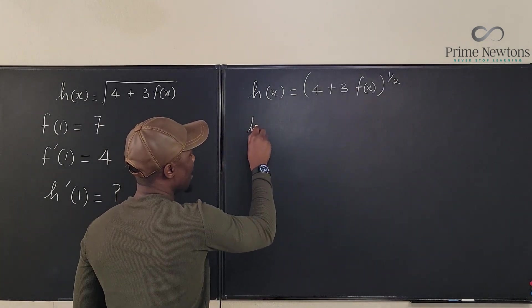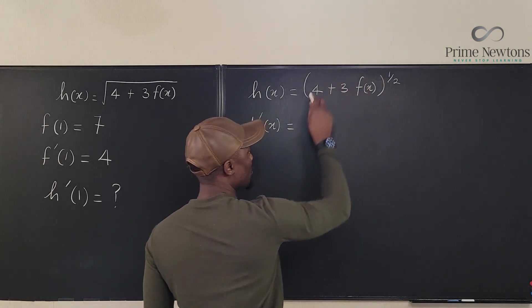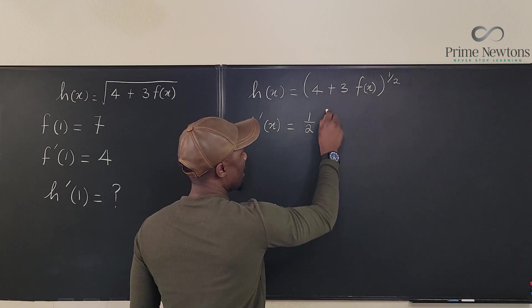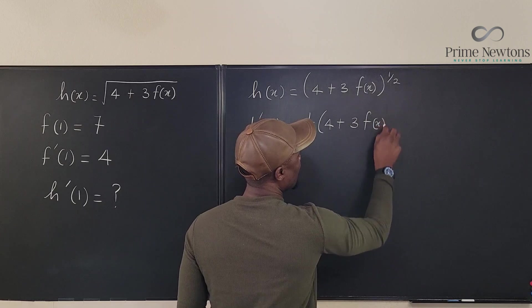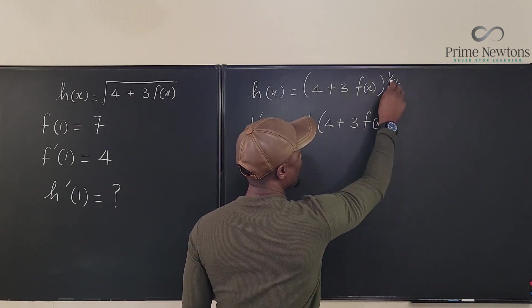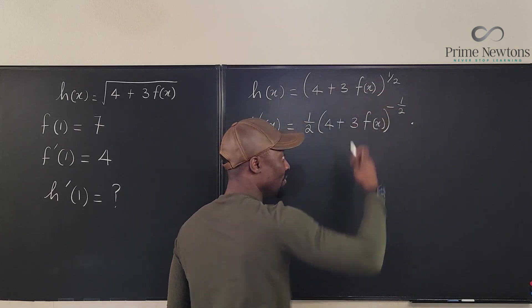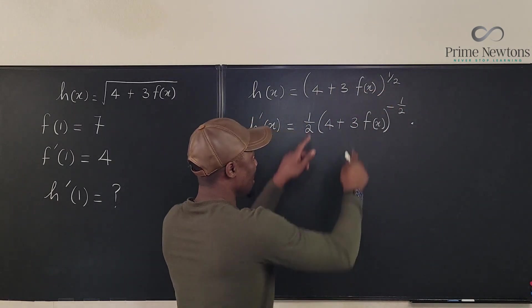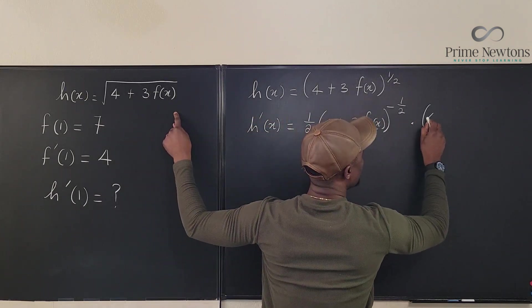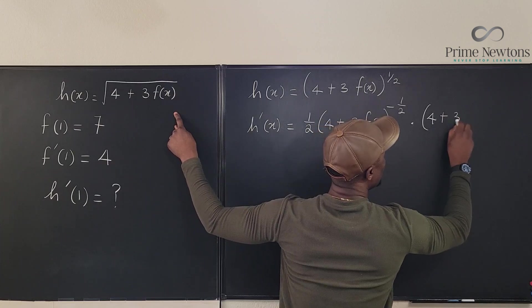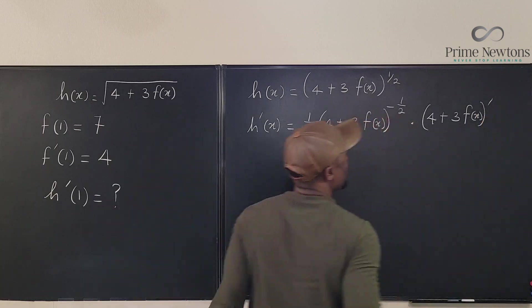So if we take h prime evaluated at x, it will be equal to - we bring down this 1/2, and then we have 4 plus 3 times f(x) raised to power, you subtract 1 from this is negative 1/2. Then you multiply by the derivative of what is inside. So we have to multiply by the derivative. I'm going to write it as 4 plus 3f(x).